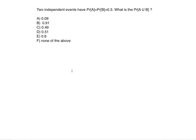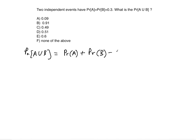The probability of A union B uses the standard formula: it is equal to the probability of A plus the probability of B minus the probability of A and B.